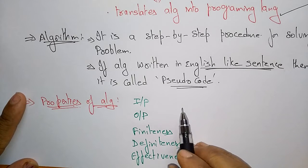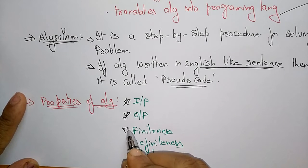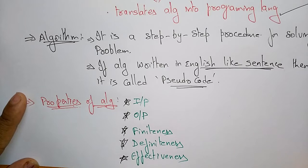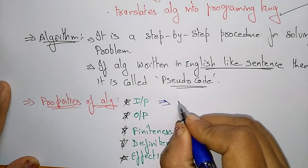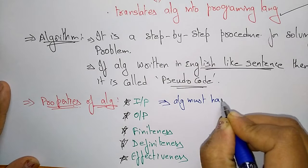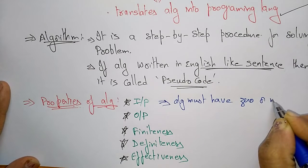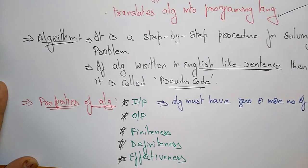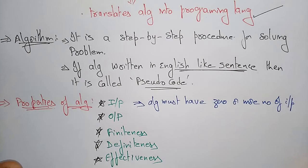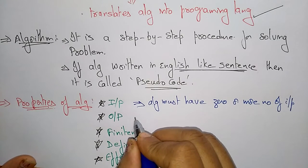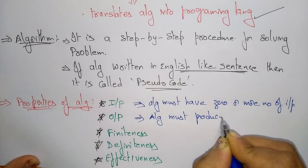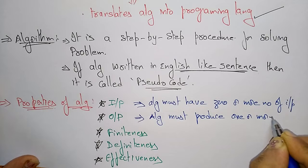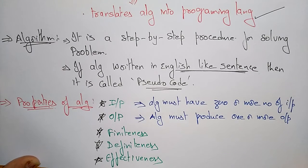The properties of algorithm are input, output, finiteness, definiteness, and effectiveness. Input means the algorithm must have zero or more number of inputs. Inputs are the values given by the user, so the user can give zero or more number of inputs. Output means the algorithm must produce one or more outputs based on the input values given.